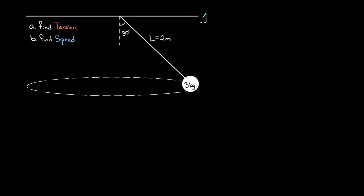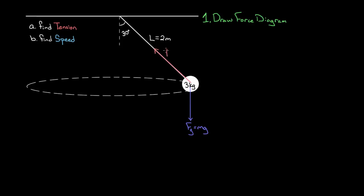That strategy is: first, draw a quality force diagram for the object in your problem. The forces acting on this three-kilogram sphere are the force of gravity — straight down, that's m times g, found using mass times 9.8 — and the only other object touching this mass is the rope, so the only other force is the force of tension, which I'll label with a capital T.